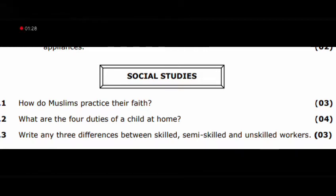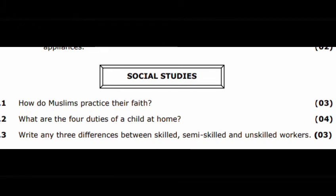Look at question number three: write any three differences between skilled, semi-skilled, and unskilled workers. We have done this question, so there won't be any hurdle or problem while writing this answer. But still, you can take help from the book — chapter: professions.